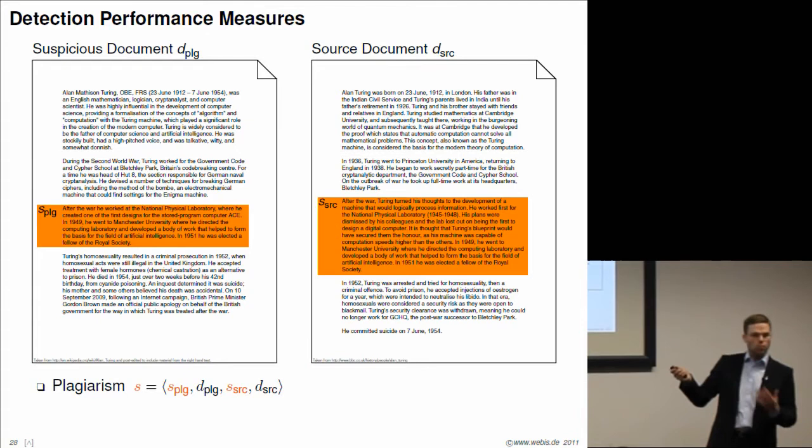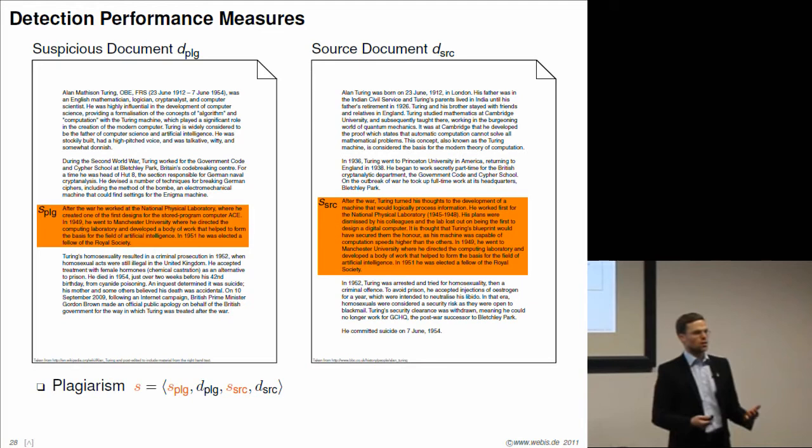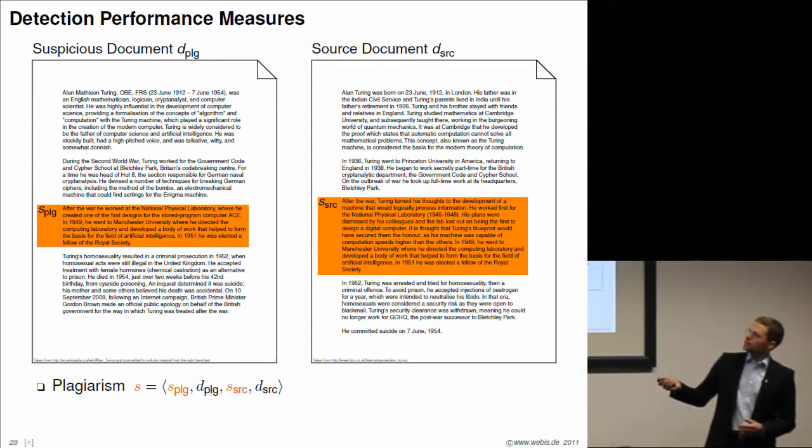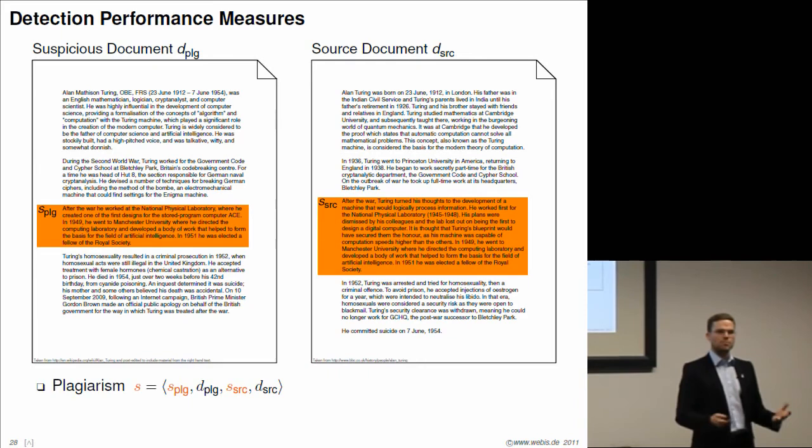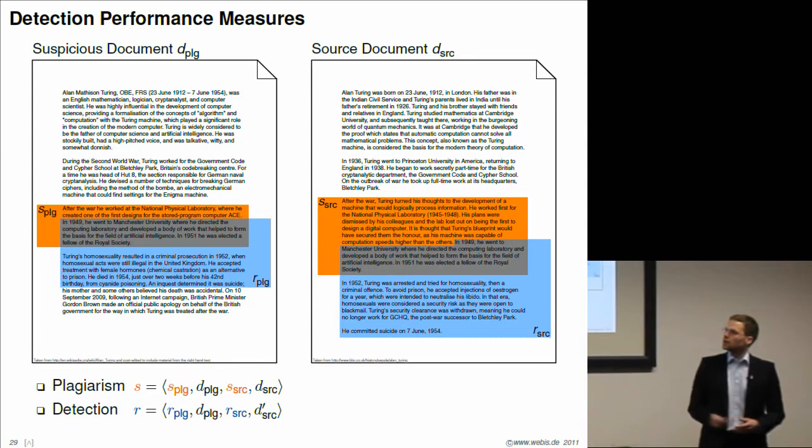Modifying plagiarized text is often done by a plagiarist in order to not be detectable that easily. This is how we notate these kinds of plagiarism cases. We put them as a four-tuple, where this is the plagiarized passage, this is the source passage, and there are two references to the respective documents. Now, let us pretend a plagiarism detector has analyzed these two documents and come up with a detection, which you can see here in blue.